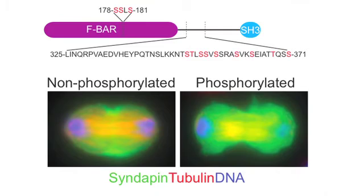Cytokinesis needs to be spatially and temporally regulated during the cell cycle — is the same true for syndapin? Yes, it is. The F-BAR domain is important for syndapin localization and function during cytokinesis, but we also found that the F-BAR domain is not sufficient in itself — further downstream uncharacterized regions are also required for its localization to the cleavage furrow. These uncharacterized regions are heavily phosphorylated, and this phosphorylation inhibits syndapin's localization to the cleavage furrow. We hypothesized that the phosphorylation state of syndapin affects its membrane binding affinity.